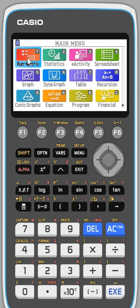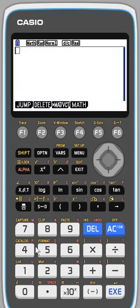From your menu screen, you're going to choose menu 1, the run matrix option, the normal standard calculating option.